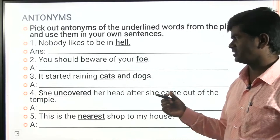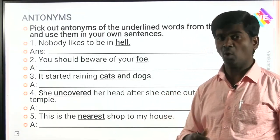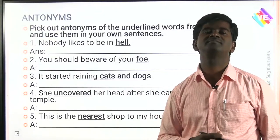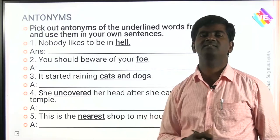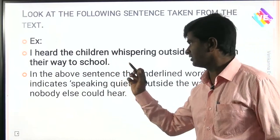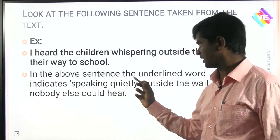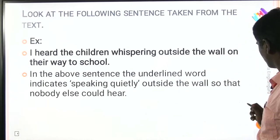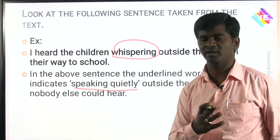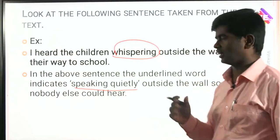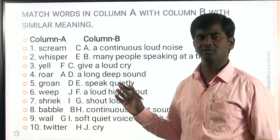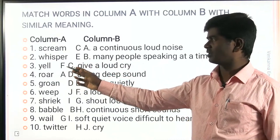Far, farther, farthest — these are comparatives. Now look at this sentence from the text: 'I heard the children whispering outside the wall on their way to school.' The underlined word 'whispering' means speaking quietly, so that nobody else could hear. You must learn the meanings of all these words carefully.